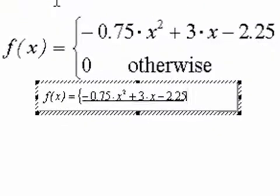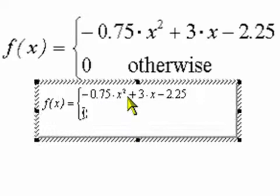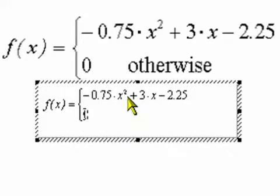Now, again, my cursor is inside that bracket. I'm going to hit enter, and my bracket grew. I'm going to type my zero.